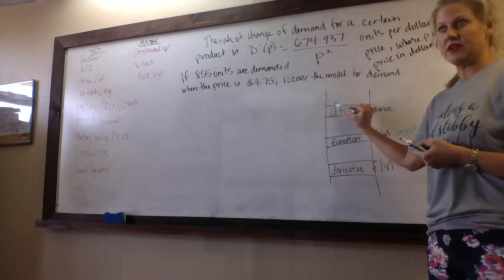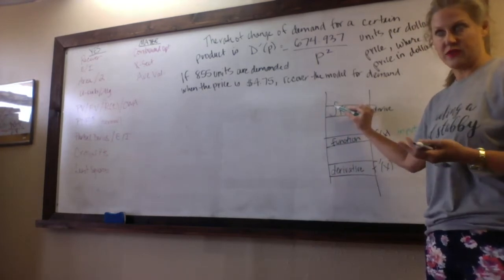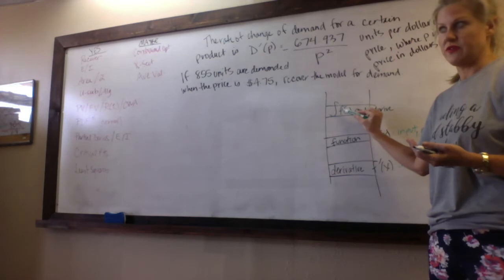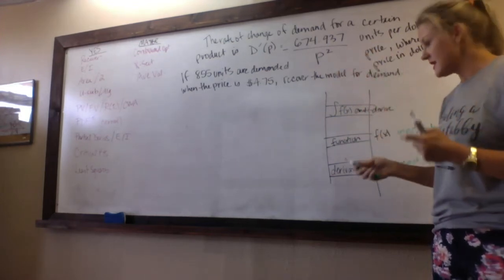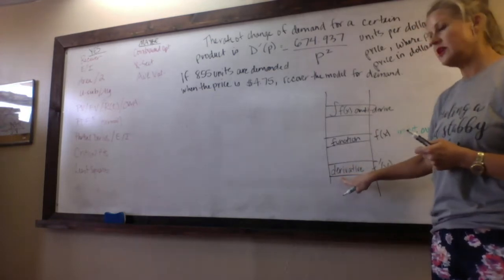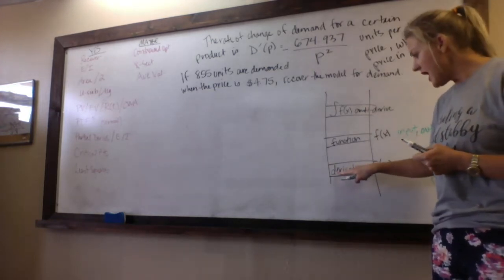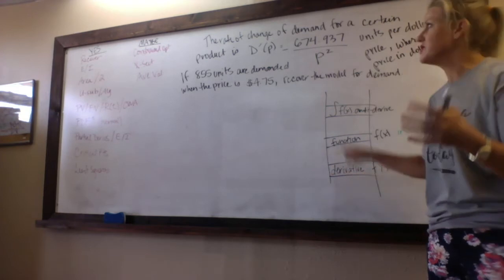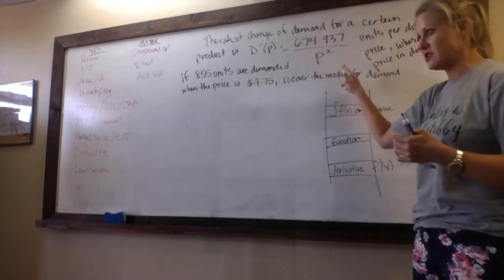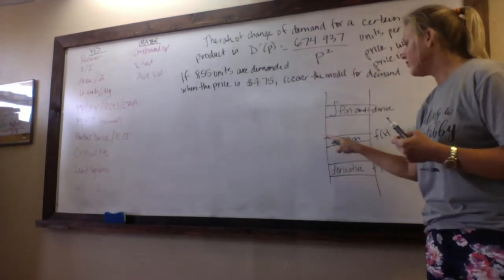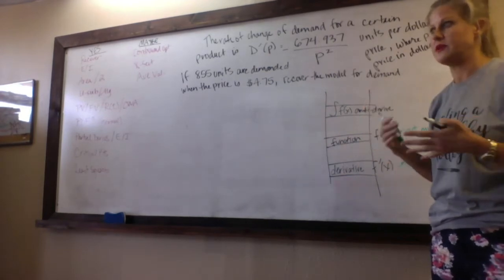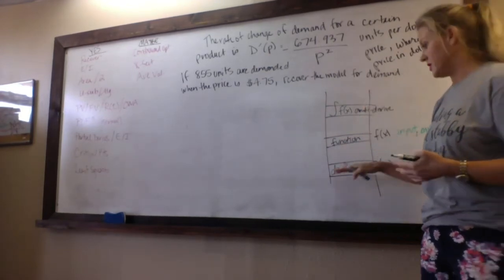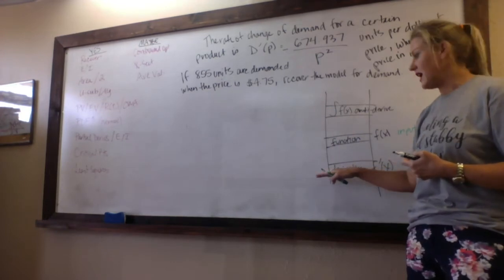Sometimes in this class they start you on this rung and they say anti-derive it and climb up and use that anti-derivative for some reason. In this question, the very first unit of this whole class, they're always starting you on the derivative rung, so they're giving you the rate of change and you are finding the function that it came from. That's the whole concept of recover the model.